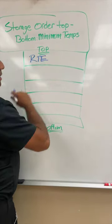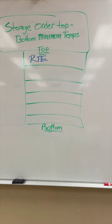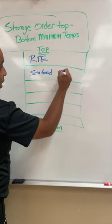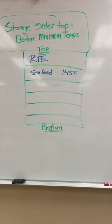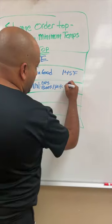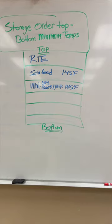Seafood is the next item. Why? 145 degrees Fahrenheit for fish. Whole cuts of beef and pork, again 145 degrees. Ground meat and ground fish, 155 degrees.